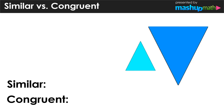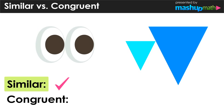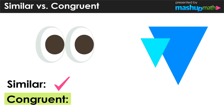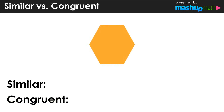Let's check out a few more examples. Looking at the two figures shown, we can see they are the same shape and proportional to each other, so we know they are similar. However, they are clearly not the same size, so we can also conclude that they are not congruent.